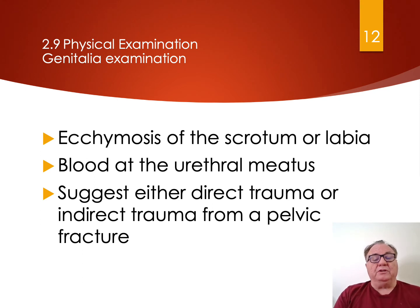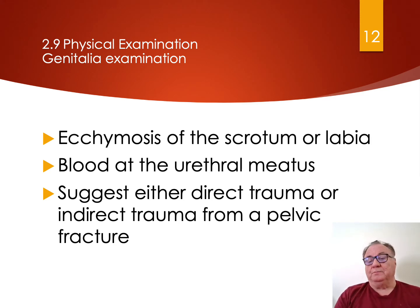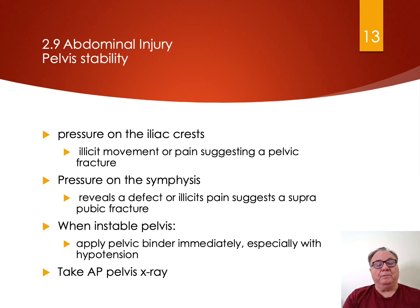The genitalia. Look for ecchymosis of the scrotum or the labia. Blood at the urethral meatus suggests either direct trauma or indirect trauma from a pelvic fracture. Assess pelvic stability with pressure on the iliac crest — if there is iliac movement or pain, it suggests a pelvic fracture.